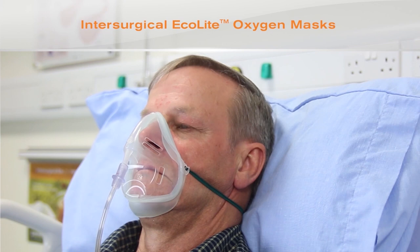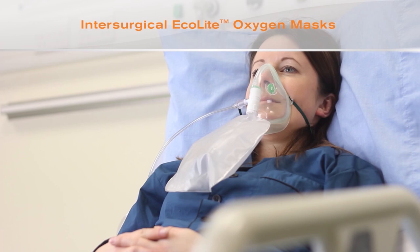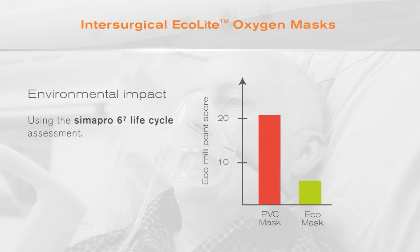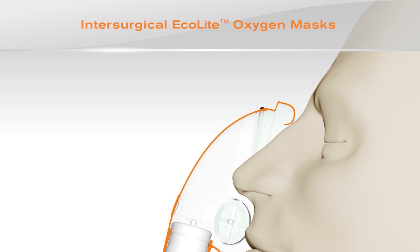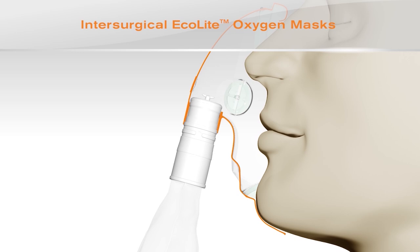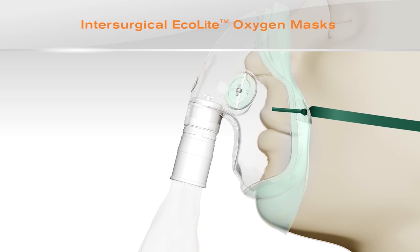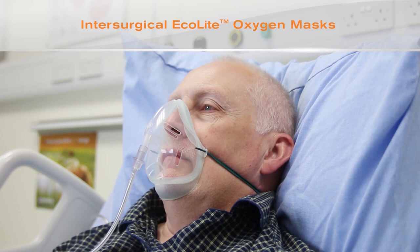The Intersurgical Ecolite range of masks represent a new development in oxygen therapy devices and address many of the limitations found in earlier designs. The materials used have a significantly lower impact on the environment. Intersurgical Ecolite oxygen masks have a lightweight design incorporating a soft face seal, which provides a high level of patient comfort. Masks seal to the contours of different face shapes to maximise delivery of oxygen to the patient and prevent oxygen from entering the eyes. They have also been designed to reduce the risk of pressure sores developing.